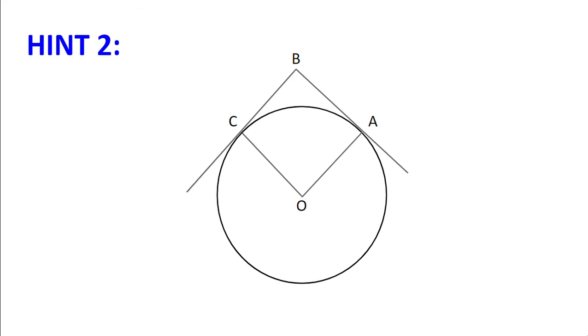Hint number 2. Remind yourself of the following facts. If AB and BC are both tangents to the circle and O is the centre of that circle, then angle OAB equals angle OCB, which are both 90 degrees. And because these angles are equal, and AO equals OC because they're both radii of a circle, OABC is a kite, and so AB equals BC.